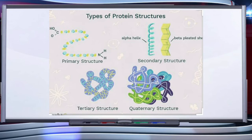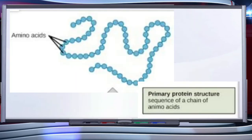Biologists describe protein structures at four levels: primary, secondary, tertiary, and quaternary. The sequence of amino acids — that is, the positional information in a protein: which is the first amino acid, which is the second, which is the third, and so on — is called the primary structure.